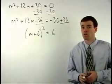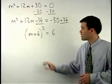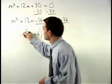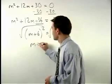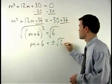And now our problem looks just like one of the examples in the previous section. To solve for m, we get rid of the squared by square rooting both sides, and we have m plus 6 equals plus or minus root 6.